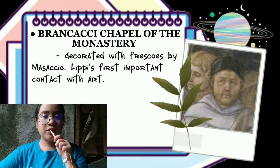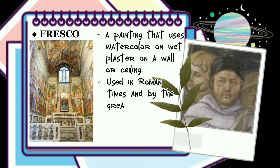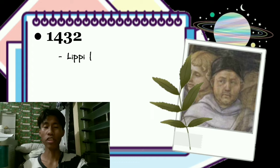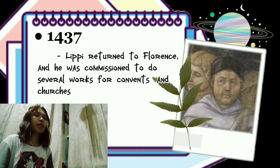Fresco is a painting method that uses watercolor on wet plaster on a wall or ceiling. This method was used in Roman times and by the great masters of the Italian Renaissance, including Giotto, Masaccio, and Michelangelo. In 1432, Lippi left the monastery after he painted some frescoes in the church and in the cloisters. In 1437, Lippi returned to Florence and was commissioned to do several works for convents and churches.